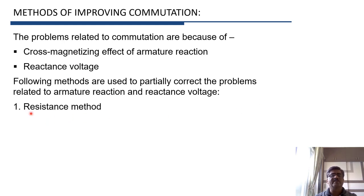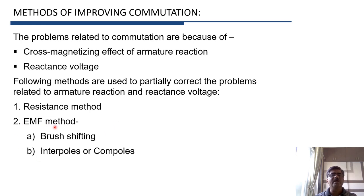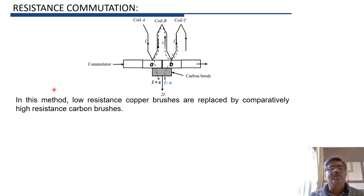The first method is called the resistance method. In this method we use carbon brushes instead of low-resistance copper brushes to reduce sparking at the brushes. The second method is called the EMF method, in which we induce an EMF equal and opposite to the reactance voltage in the coil, thereby obtaining sparkless commutation. We will study the resistance method in this video and the EMF method in our next video. Let us now see resistance commutation — in this method the low-resistance copper brush is replaced by a high-resistance carbon brush.